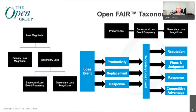On the other side of the tree we have Loss Magnitude — the probable magnitude of loss resulting from a loss event. In Open FAIR, risk always has this loss component. Primary losses occur as a direct result of the threat agent's action upon the asset, giving you the Primary Loss Magnitude: the direct, observable economic impact to the primary stakeholder. Critically, in Open FAIR you are always doing the analysis from the perspective of this primary stakeholder.